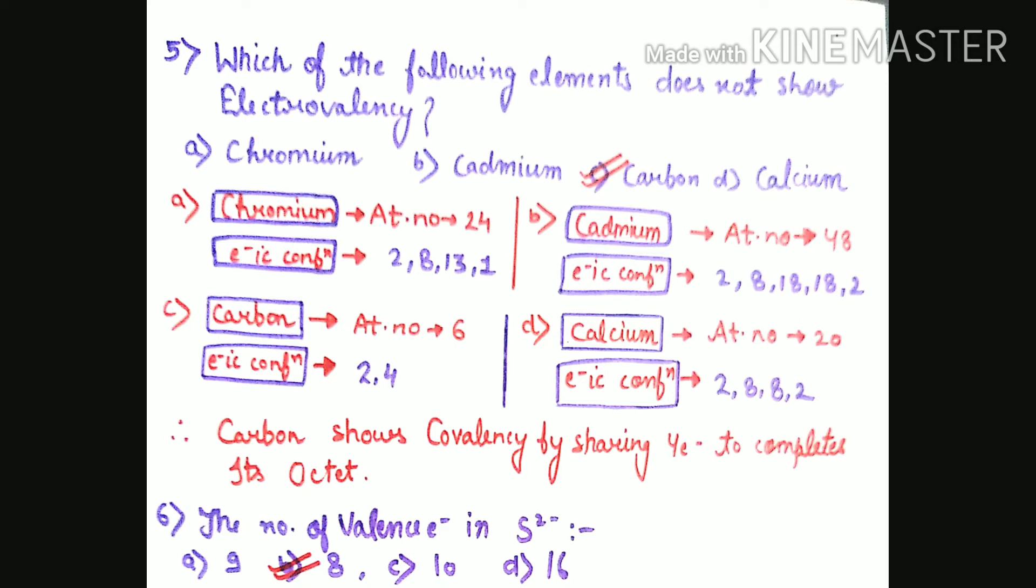Carbon's atomic number is 6, electronic configuration 2,4. It needs four electrons which it will share to complete its octet. Whenever any atom shares electrons to complete its octet, it represents covalency. So carbon represents covalency. The right answer is carbon, because carbon is not showing electrovalency here.